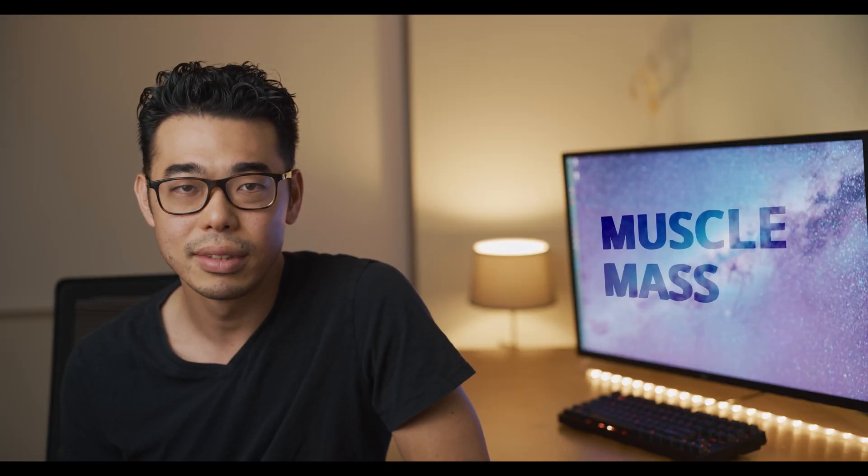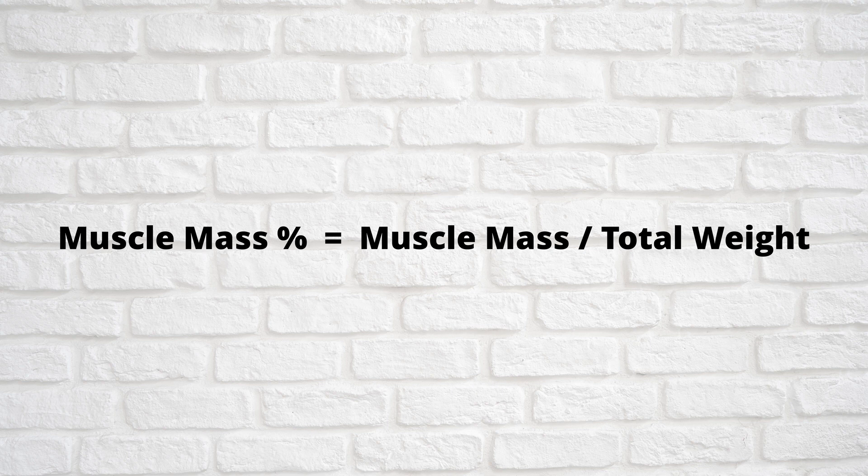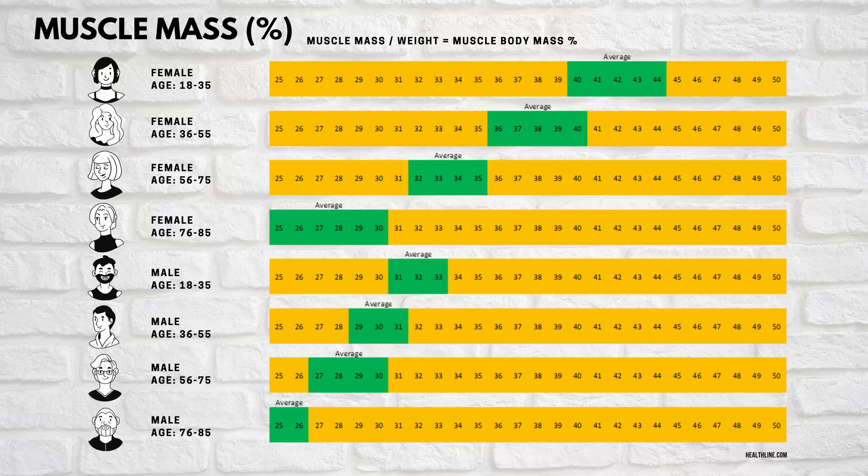Next let's go to muscle mass. You'll need a calculator for this one as well — you'll want to divide the muscle mass number by your total weight to get a percentage. Depending on your sex and age, these are the target ranges you want to hit.